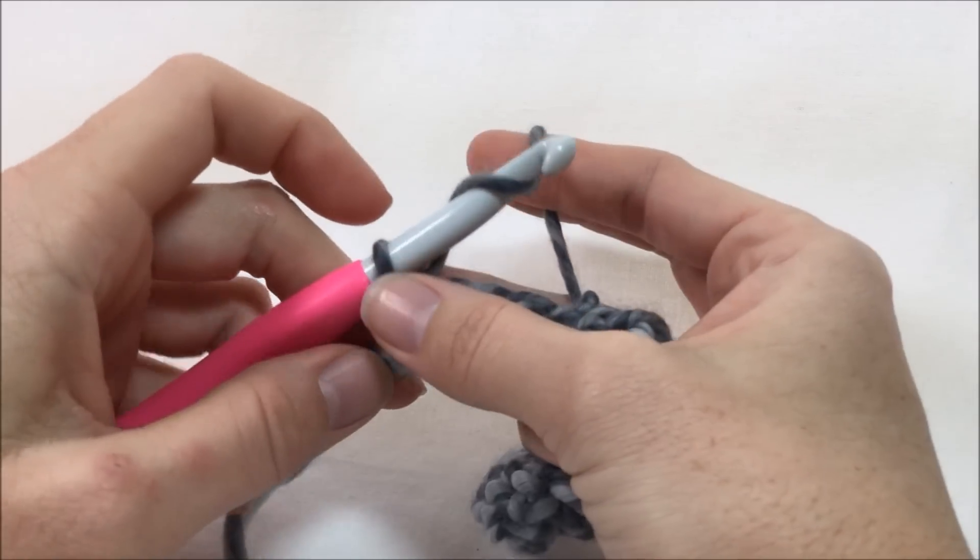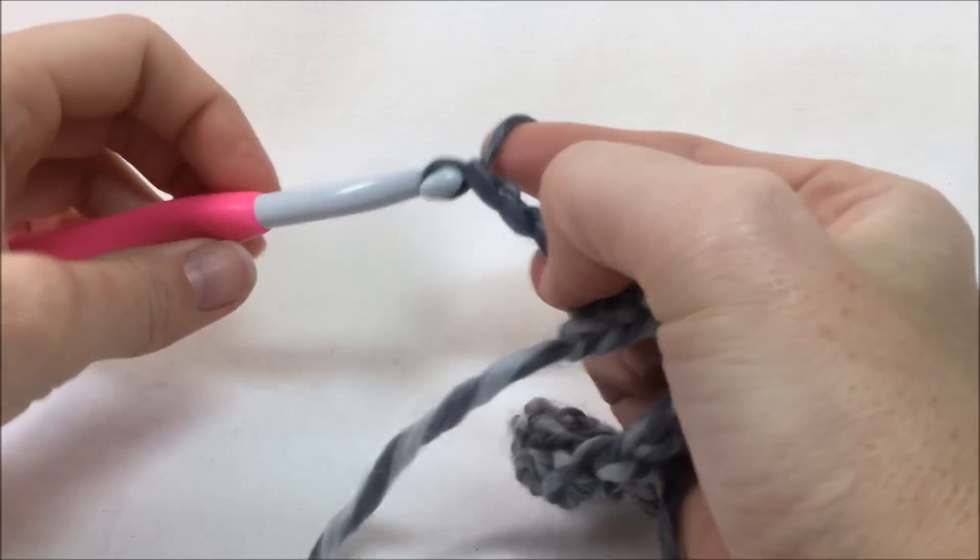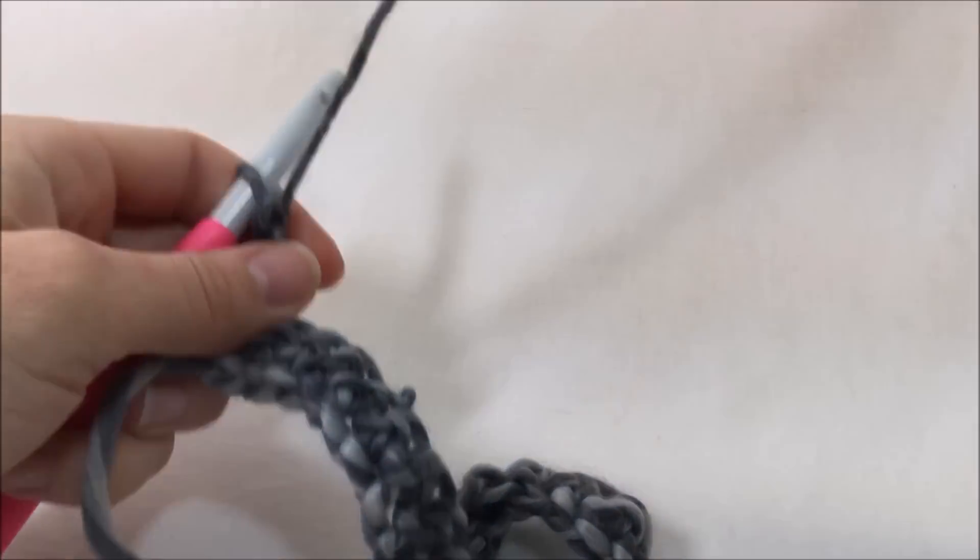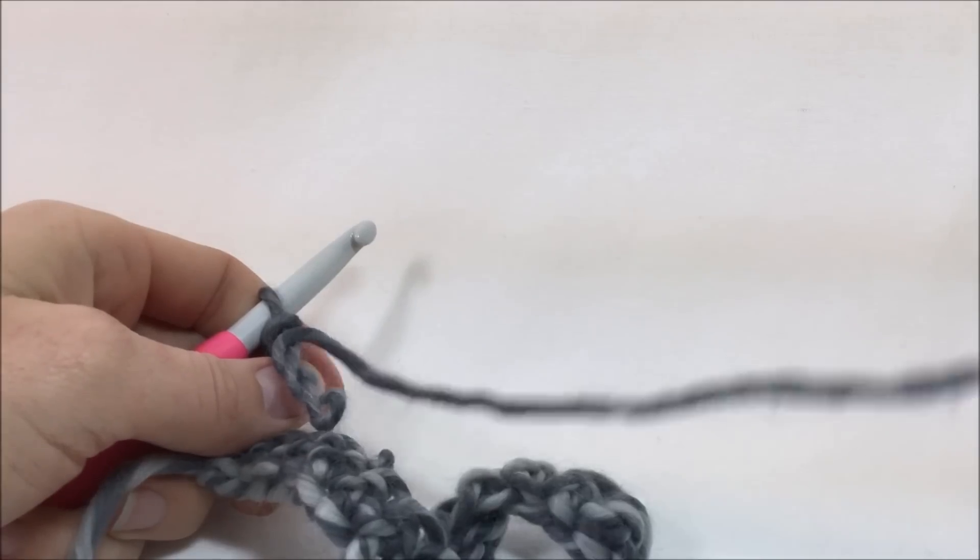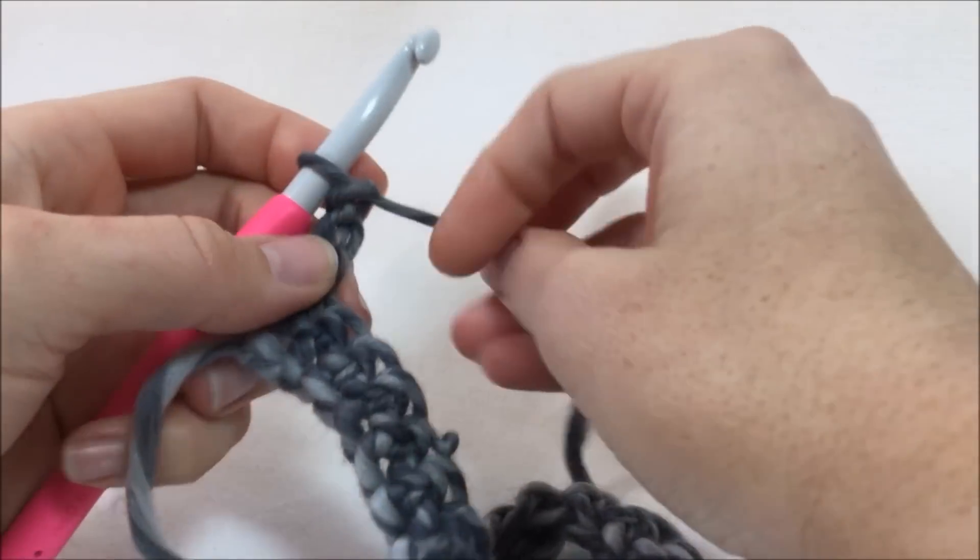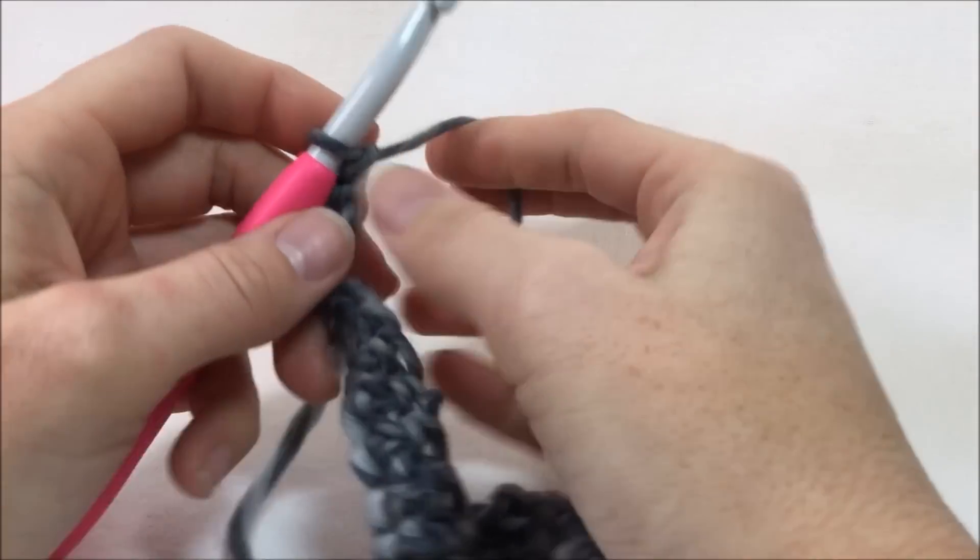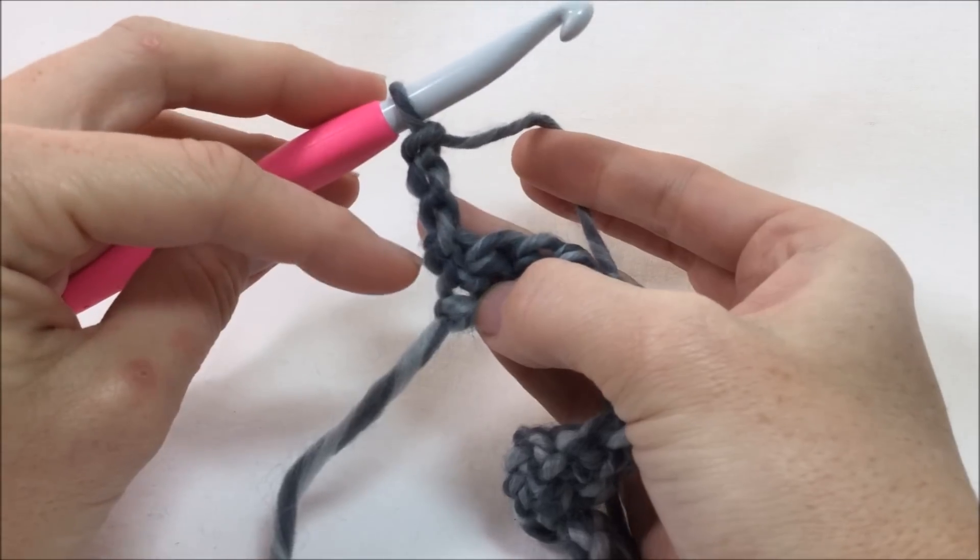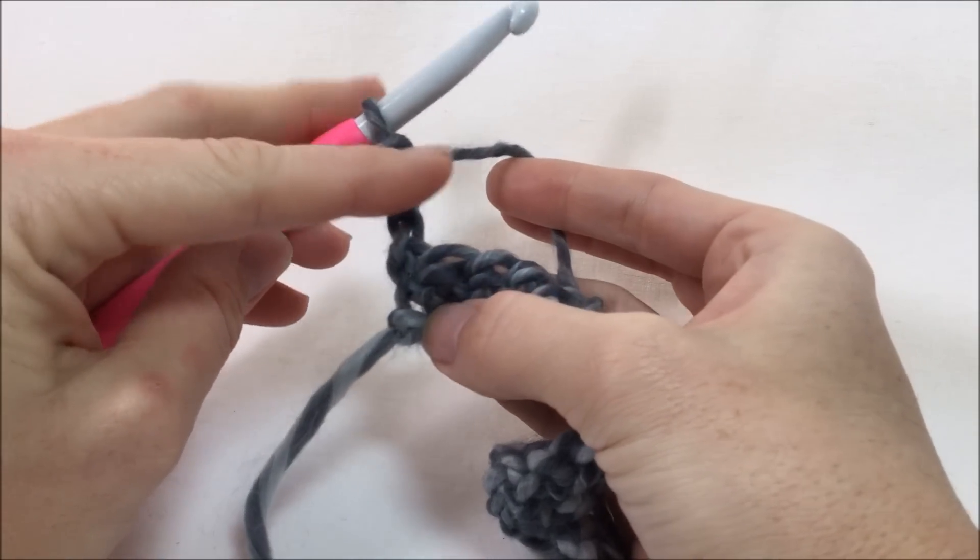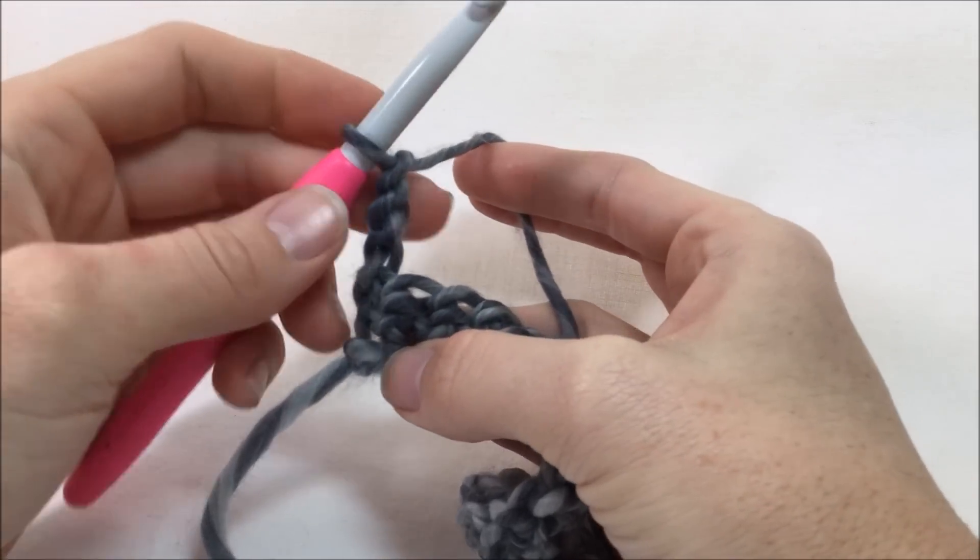Now we're going to do row two. So to start it off we're going to chain three, and this chain three is going to count as a double crochet. You can always do a tall chain with a double crochet. If you watch my videos you know what that is. If you don't, check out my eliminating gaps from your turning chain video. This one will work because we're not putting any double crochets next to it. That's why I'm just going with the chain three.